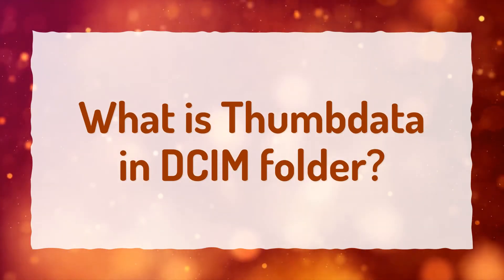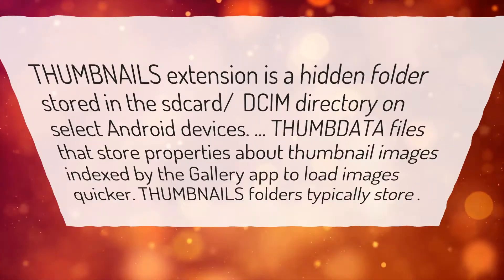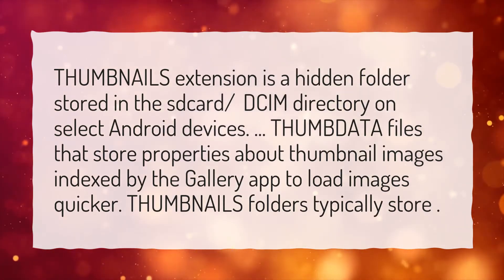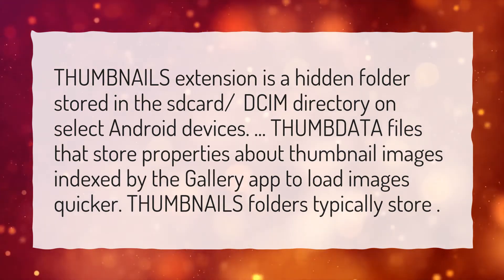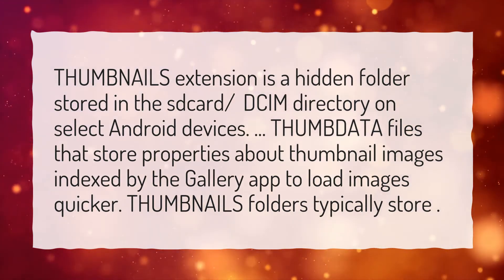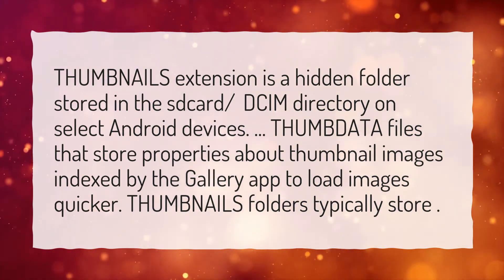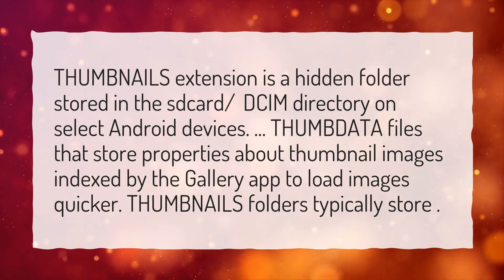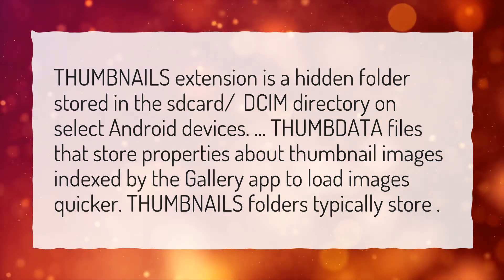What is ThumbData in the DCIM folder? The Thumbnails extension is a hidden folder stored in the SD card's DCIM directory on select Android devices. THUMBDATA files store properties about thumbnail images indexed by the gallery app to load images quicker. Thumbnails folders typically store this data.